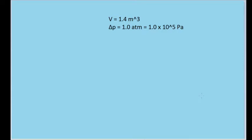In this problem, we are given the description of a pipe that has a pressure difference on each end of the pipe of 1.0 atmospheres, or 1.0 times 10 to the fifth power of Pascals.